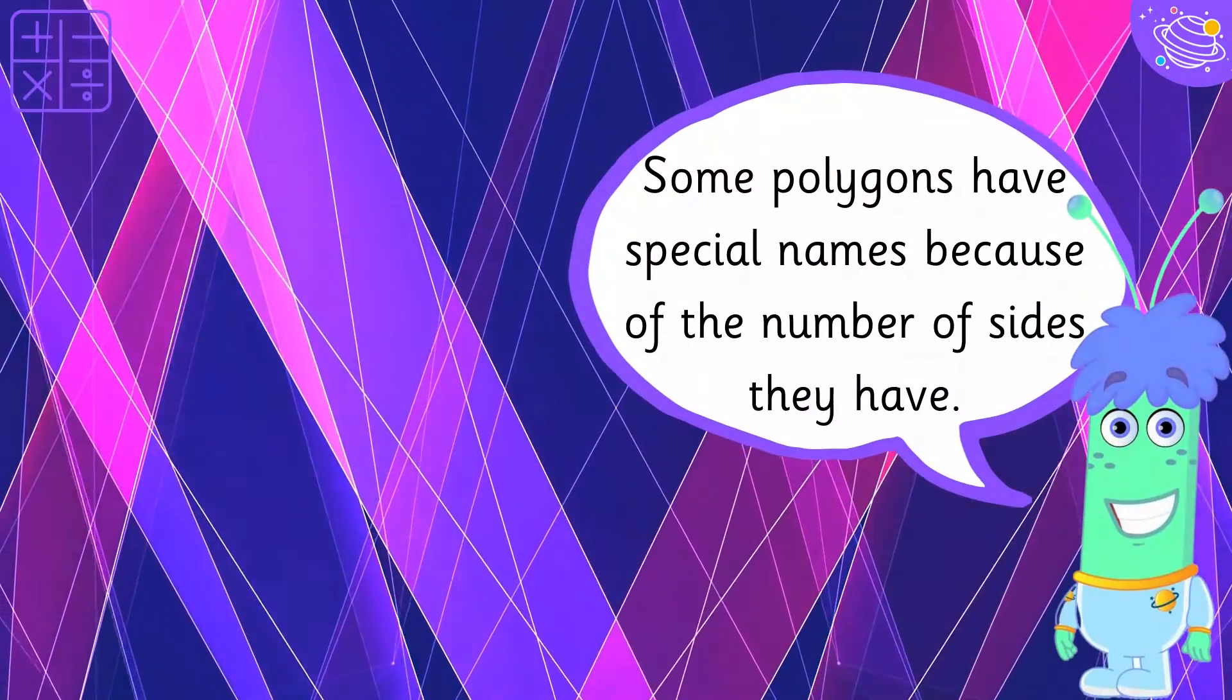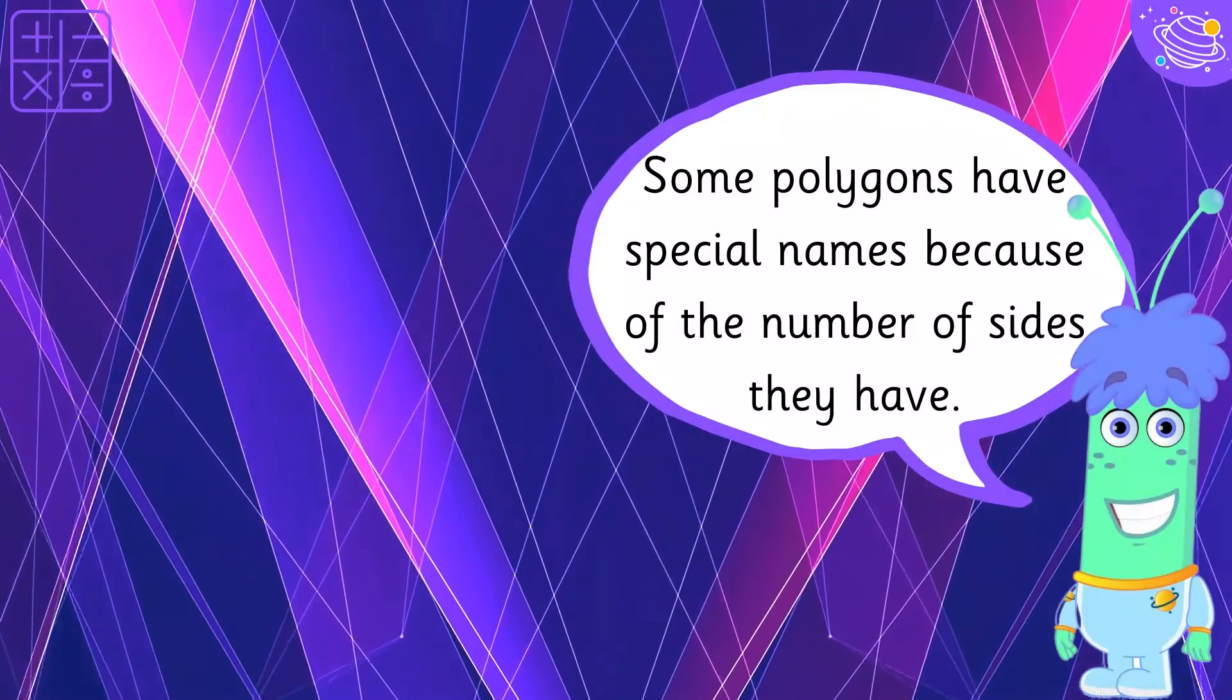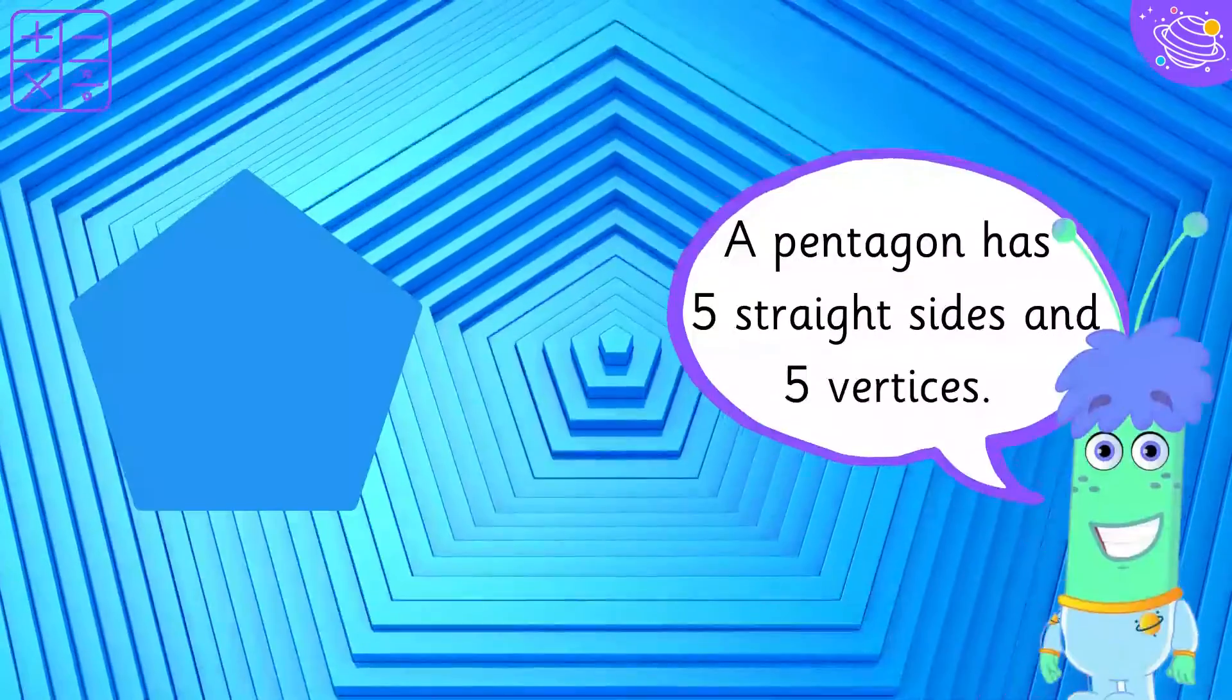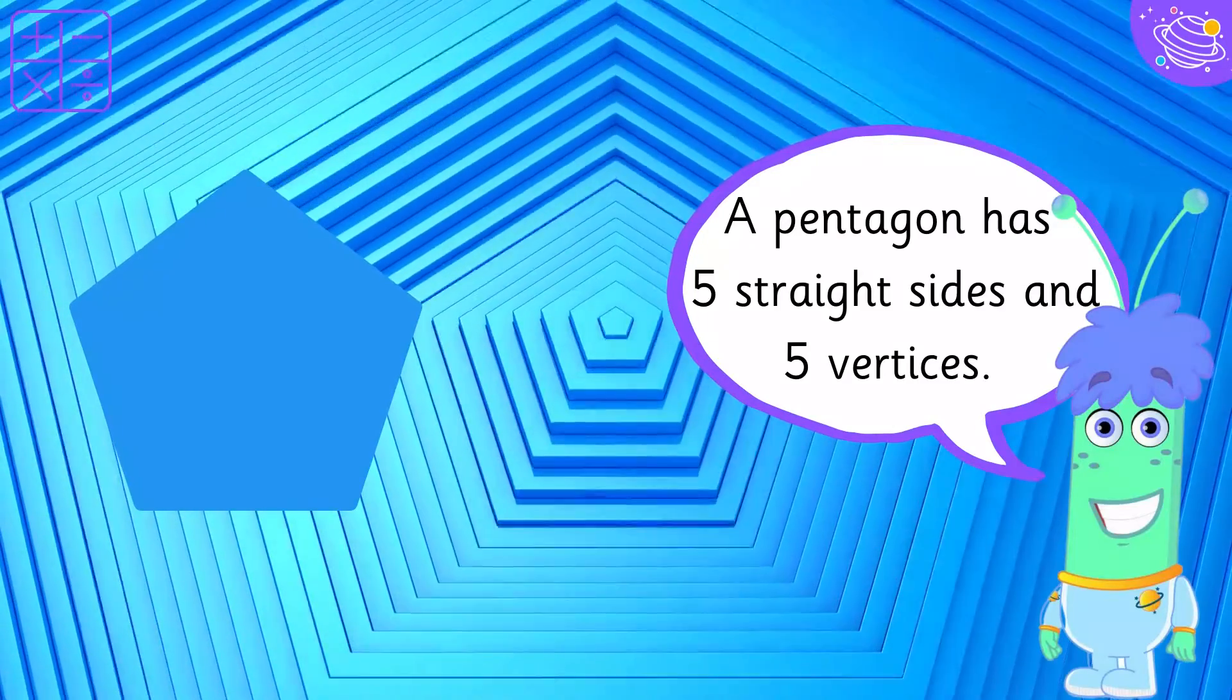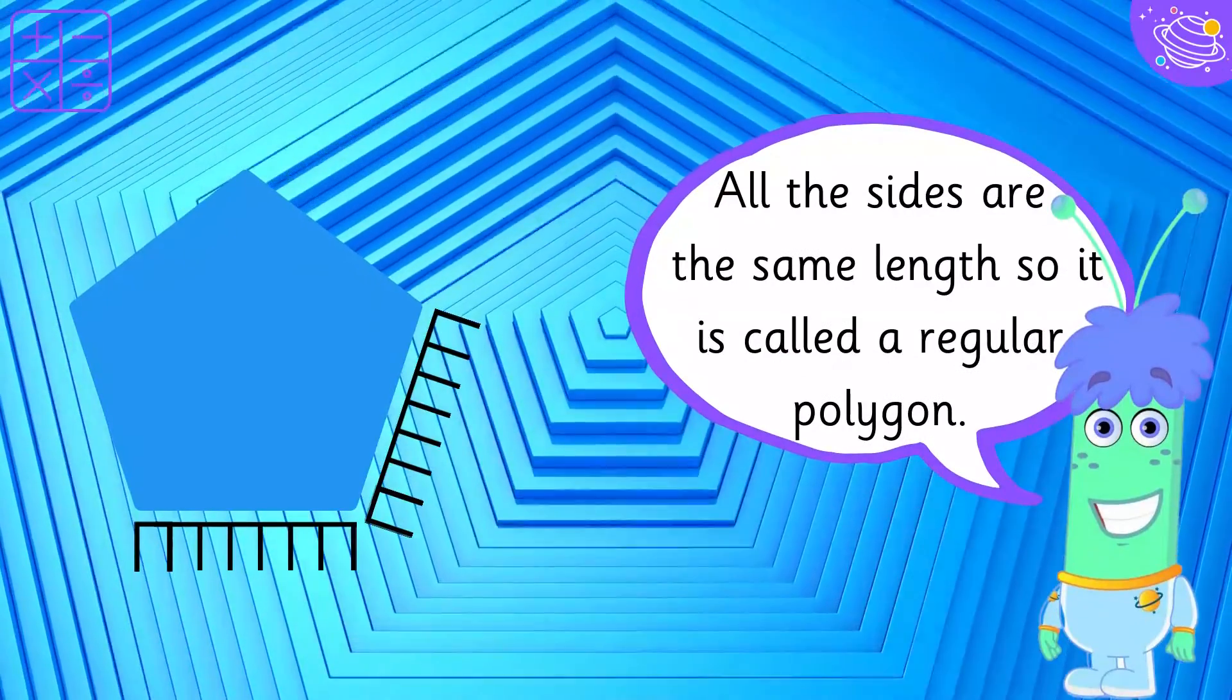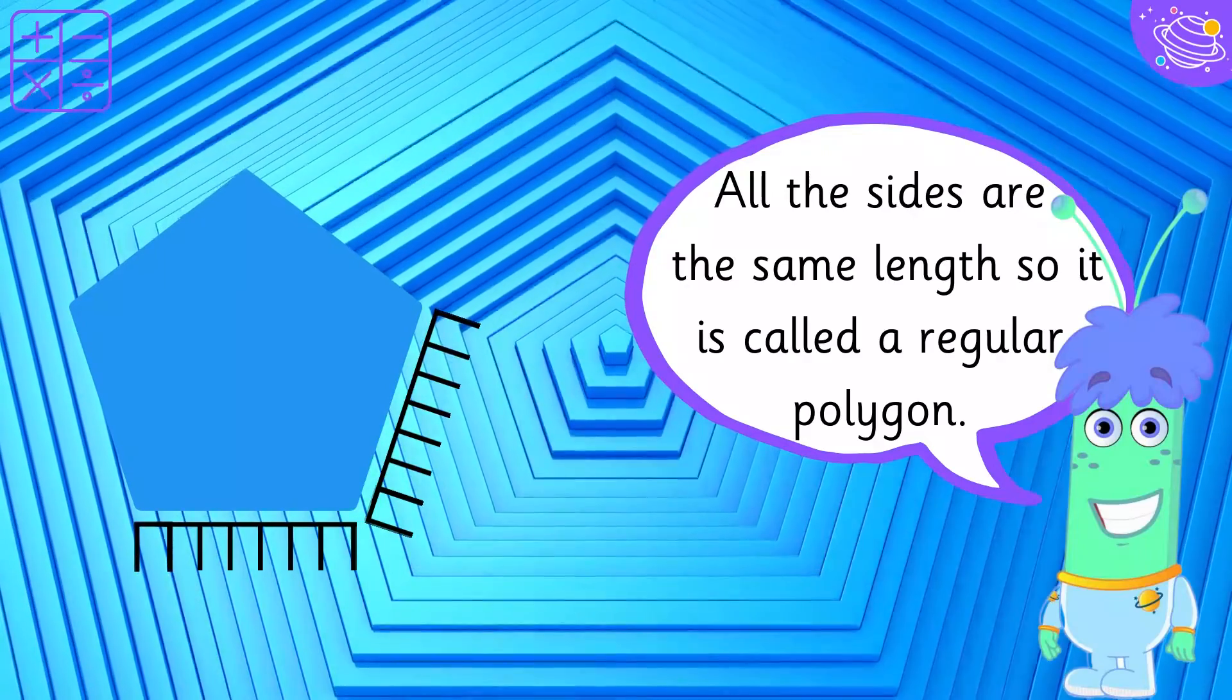Some polygons have special names because of the number of sides they have. A pentagon has 5 straight sides and 5 vertices. All the sides are the same length, so it is called a regular polygon.